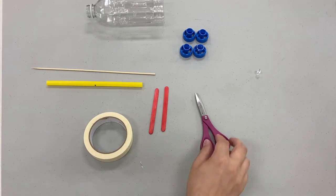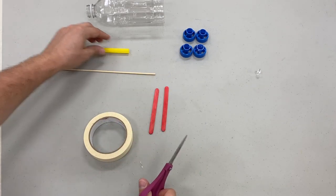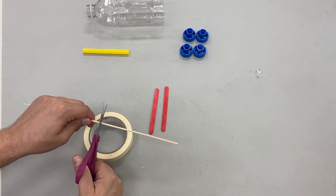With the bottom of our bottle removed, we're going to take our scissors and cut our straw and skewer in half. Try your best to cut them in the middle. If you need to use a ruler to find the middle, go ahead and do so.